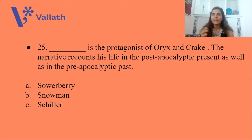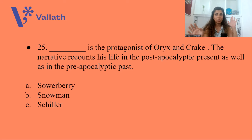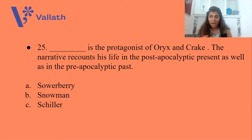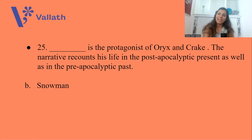Question number twenty-five: Who is the protagonist of Oryx and Crake? The narrative recounts his life in the post-apocalyptic present as well as the pre-apocalyptic past — basically, the world has been destroyed by a plague that killed almost all of humanity, and this protagonist survives. His name is A. Sourberry, B. Snowman, or C. Schiller. The answer is option B, Snowman — who was called Jimmy before, but is now known as Snowman.